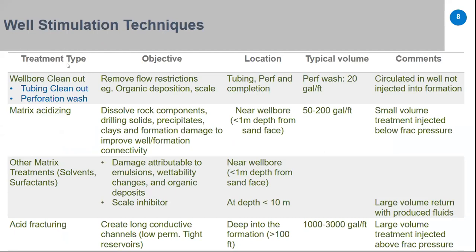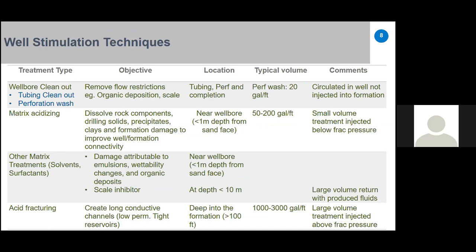There are five or six common well stimulation techniques. The first is wellbore clean-out, which includes tubing clean-out and perforation wash. The objective is to remove flow restrictions in the wellbore — organic deposits like asphaltene or paraffin, and scales — located in the tubing, perforations, and completion. The damage is not in the formation itself. Typical volume for perforation wash is 20 gallons per foot, and this treatment is circulated inside the wellbore, not injected into the formation.